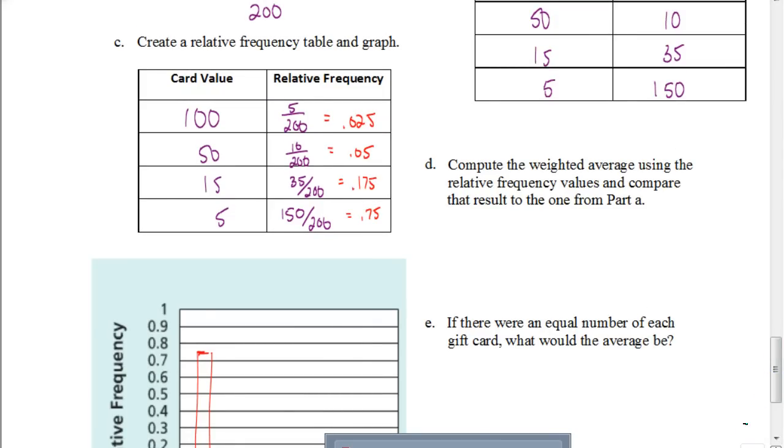Now let's look at part D. Part D says compute the weighted average using the relative frequency values and compare that result to the one from part A. So now we're going to find the weighted average using the information from this table. To do that, I'm going to write it like this. Now you could use the 0.025, but you'll see in a minute why I'm using the fraction form, why I'm using the ratios. So now this is what I would use to find the weighted average. Now you might say, wait a minute, to find the weighted average, aren't we supposed to divide by a number? Well, in essence, we are. We're dividing each of those frequencies by 200. So we've already done that portion.